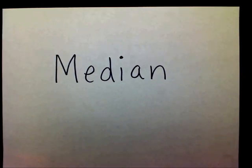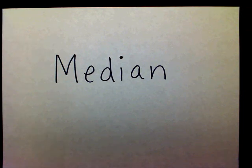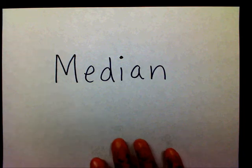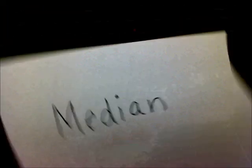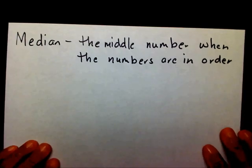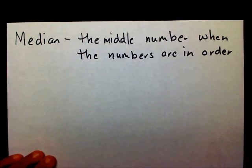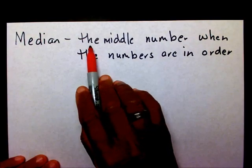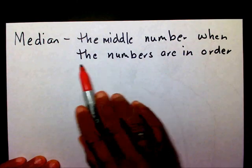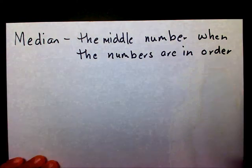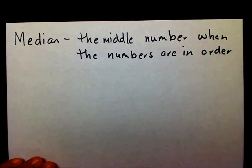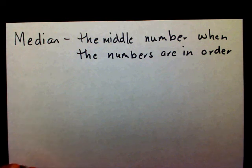The median is another one of the measures of central tendency, and that's what we're going to talk about today. The median is the middle number when the numbers are in order. Let me show you what I mean by that.